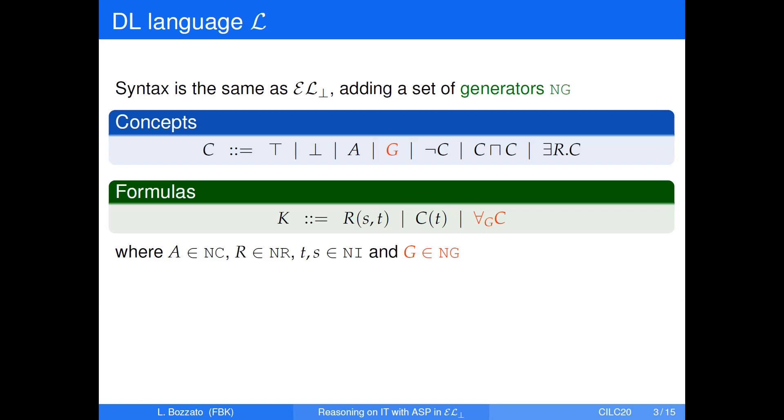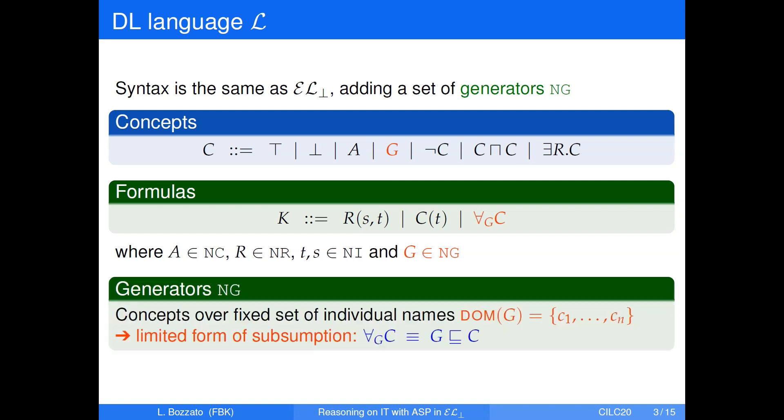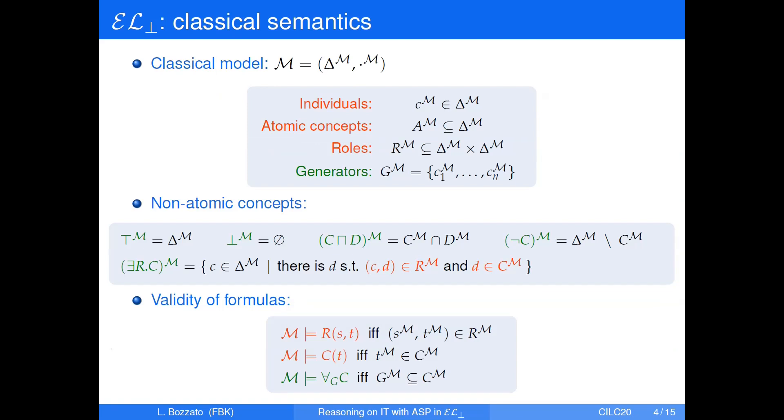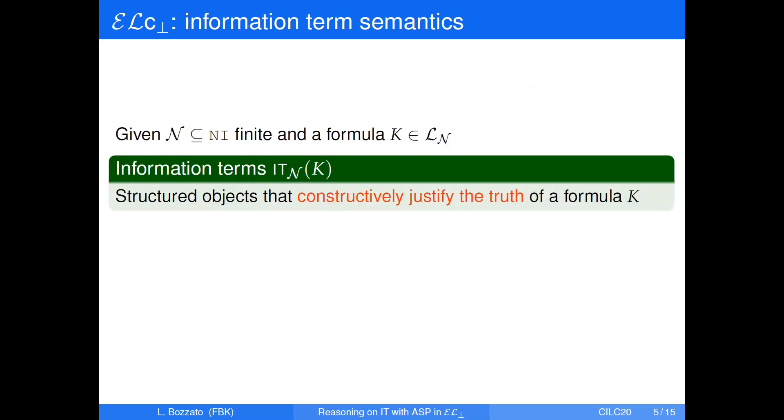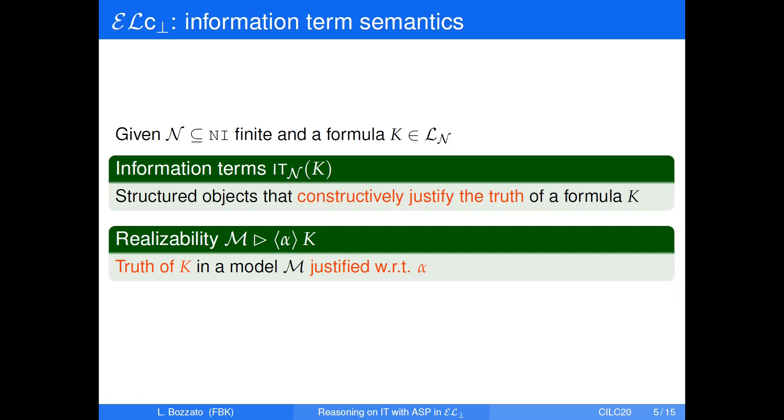With respect to the language, we consider the basic definition of EL bottom. The only notable difference is the introduction of generators that are concepts over a fixed set of individual names that are used in a limited form of concept inclusion. This restriction simplifies the presentation of the constructive semantics. The classical semantics for EL bottom is defined as usual, where, as you can see, we restrict the form of concept inclusions only to generators on the left-hand side. On the base of this, we define our information term semantics for EL bottom.